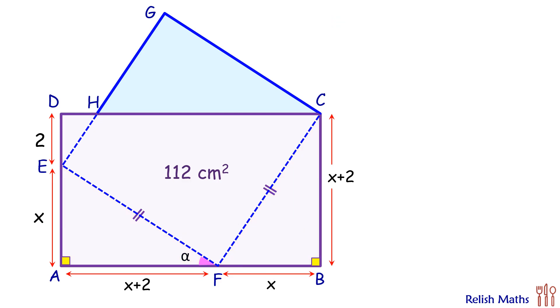We know that area of rectangle is length times breadth. Here the area of rectangle is given as 112. Length is 2x plus 2, and breadth is x plus 2 centimeter. So putting these values, if we open the brackets we'll get a quadratic equation.